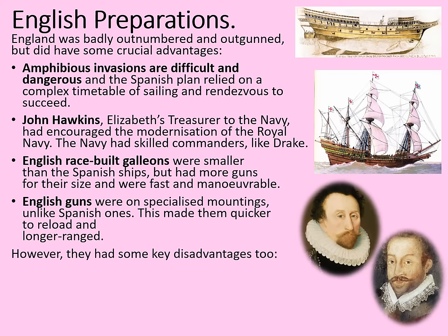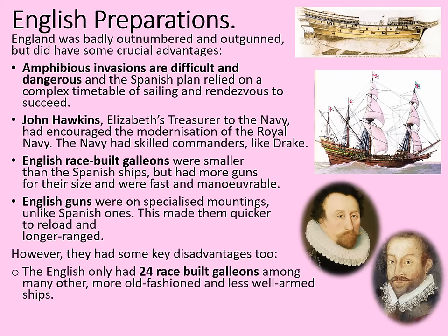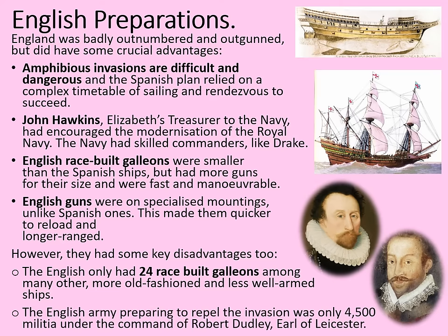However, the English had some key disadvantages too. They only had 24 race-built galleons among many other more old-fashioned and less well-armed ships. Also, the English army preparing to repel the invasion was only 4,500 militia under the command of Robert Dudley, Earl of Leicester — not enough men to throw back a force of 27,000 trained soldiers. Essentially, the English had to make sure that army never arrived in the first place.